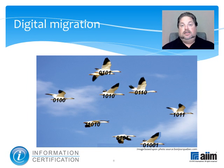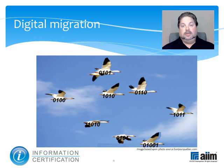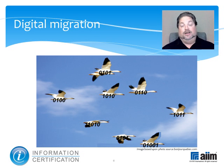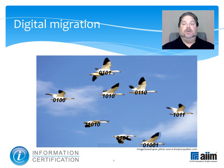Along the same lines, digital migration involves periodically moving files from one file encoding format to another that's usable in a more modern computing environment. A good example is moving a WordStar file to WordPerfect, then to Word 3.0, then to Word 5.0, and so on, perhaps all the way to Word 2010. Migration seeks to mitigate readability issues associated with having files encoded in a wide variety of older file formats by gradually bringing them all into a limited number of contemporary formats.